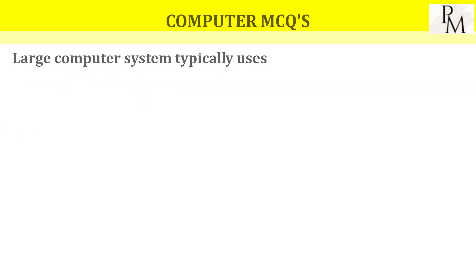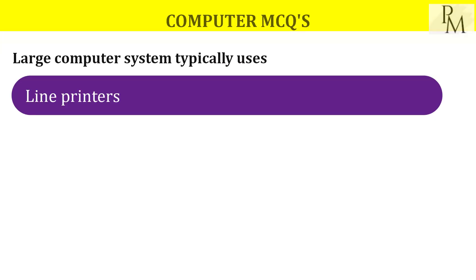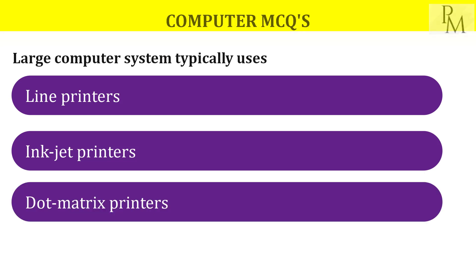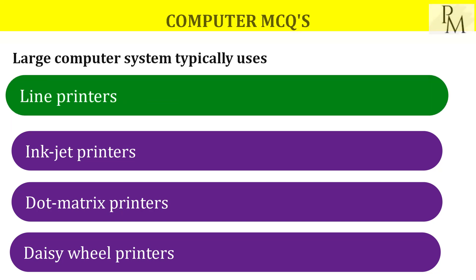Large computer systems typically use which type of printer? The options are line printers, ink, dot matrix, and daisy wheel. Large computer systems use line printers.